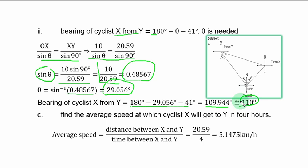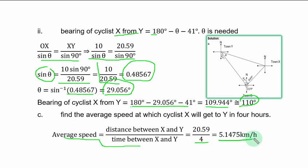Part C: find the average speed at which cyclist S will get to Y in 4 hours. The distance between S and Y is 20.59 km and the time is 4 hours. Average speed equals distance over time equals 20.59 divided by 4 equals 5.1475 kilometers per hour.